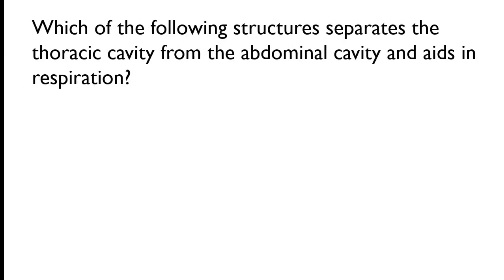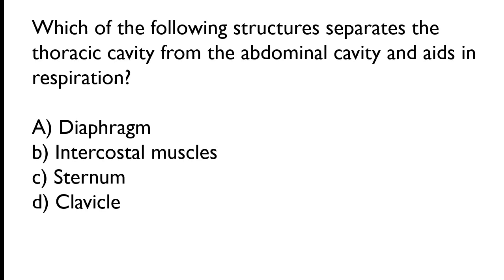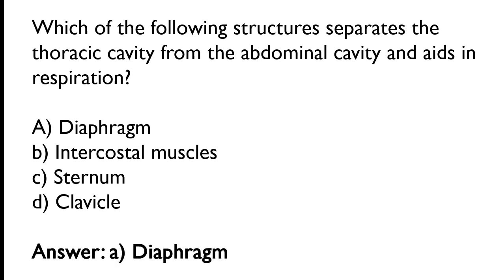Which of the following structures separates the thoracic cavity from the abdominal cavity and aids in respiration? Diaphragm, intercostal muscle, sternum, clavicle. The correct answer is option A: diaphragm. The diaphragm separates the thoracic cavity from the abdominal cavity and aids in respiration.